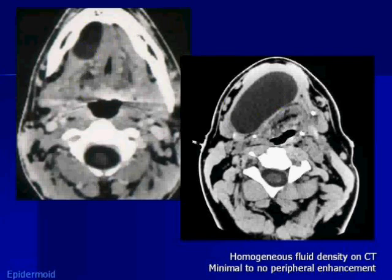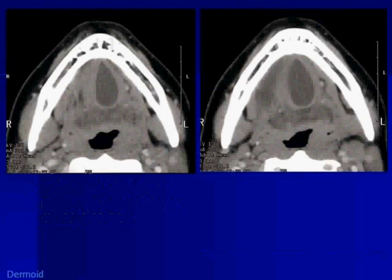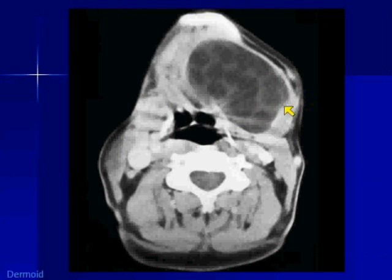Another congenital entity that can be a confuser is the dermoid. The dermoid is just like the epidermoid except it is lined by keratinizing squamous epithelium and also has skin appendages, making it heterogeneous. Sometimes you still can't tell the difference, as in this case — a midline cystic non-enhancing structure that looks homogeneous, making epidermoid versus dermoid the differential. Dermoids are more common, but when you get lucky you can see fat contents — little globules within it — and know exactly what it is.